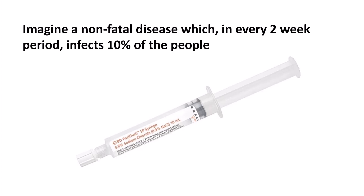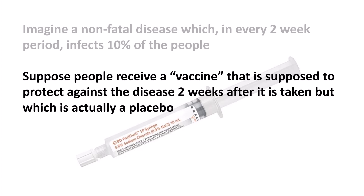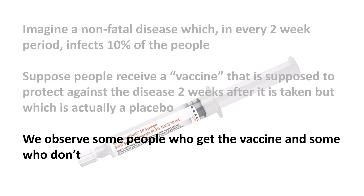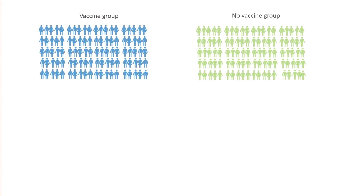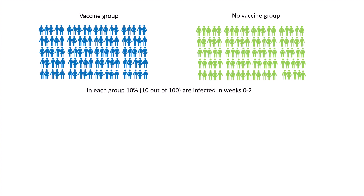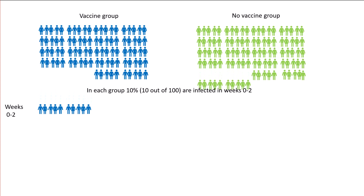Imagine a non-fatal disease which in every two-week period infects ten percent of people previously uninfected. Suppose people receive a vaccine supposed to protect against the disease two weeks after it's taken, but which is actually a placebo. We're going to observe a hundred people who get the vaccine and a hundred who don't. In each group, ten percent — that's ten out of a hundred — are going to be infected in the first two weeks. Because it's a placebo, it doesn't make any difference.